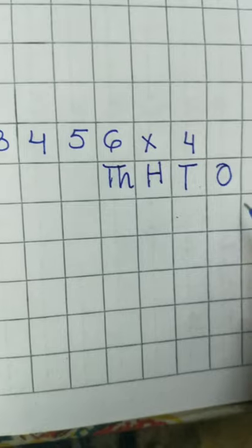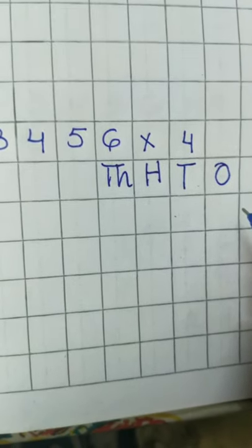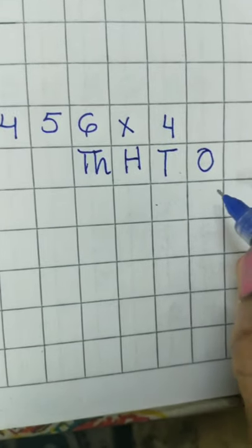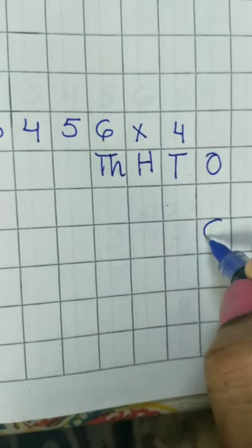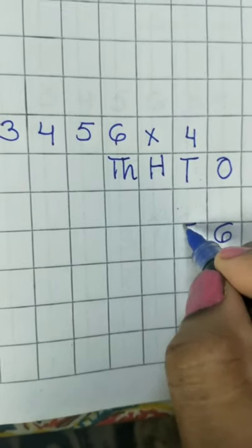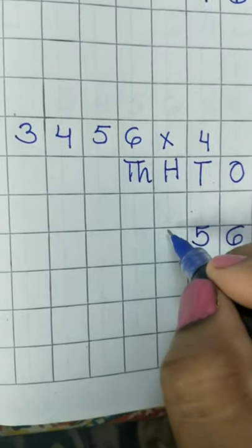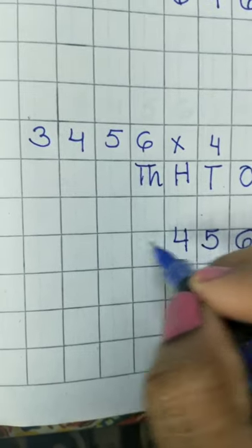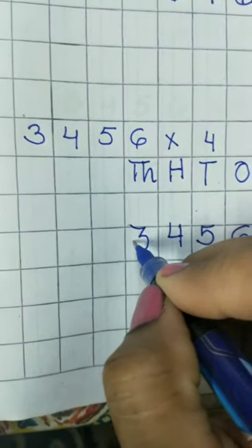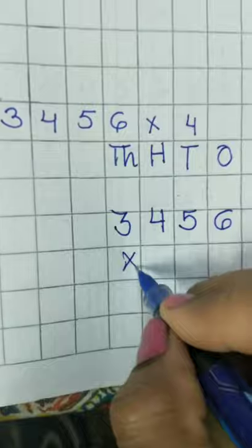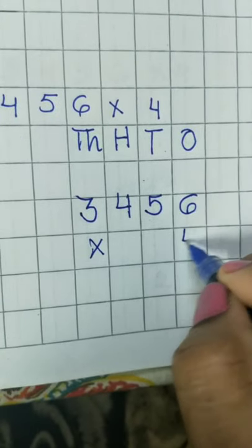Now copy the sum here. Our sum is 3456. Let's write 6, 5, 4, 3, multiply by 4.